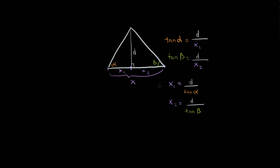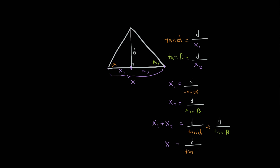Why is this useful? Because x1 plus x2 equals x, and since we don't know x1 or x2 individually but we do know x, it's important to express those two unknowns in terms of the known variable. Combining the two equations: x1 + x2 = x = d/tan(alpha) + d/tan(beta).